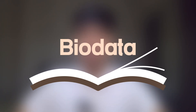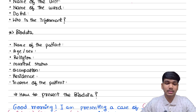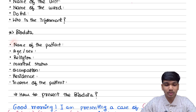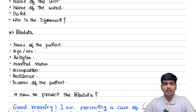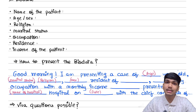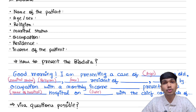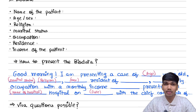Next comes the bio data of the patient. In bio data, you shall mention the name of the patient, the age, the sex, the religion, marital status, occupation, residence, and income of the patient. With the income of the patient, you can classify the person on the basis of the modified Kuppuswami scale into a socioeconomic status. But if you do not know it properly, then avoid emphasizing it in vivas.